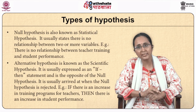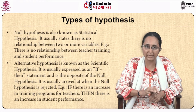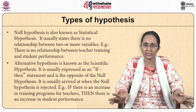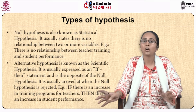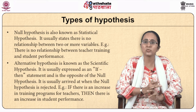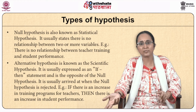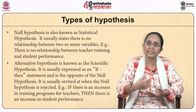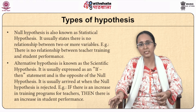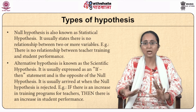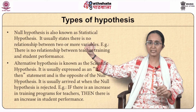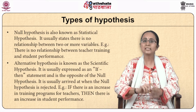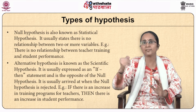There are two types of hypothesis. The null hypothesis — or statistical hypothesis — states that there is no relationship between two or more variables. For example: There is no relationship between teacher training and student performance. The alternative hypothesis — or scientific hypothesis — is the opposite of the null, and you get it when the null hypothesis is rejected. For example: If there is an increase in teacher training programs, then there is an increase in student performance. It is usually stated as an if-then statement.